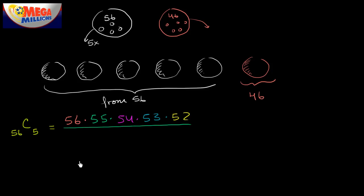So what you want to do is divide this by the way that five things can be ordered. And if you're ordering five things, the first of the five things can take five different positions. Then the next one will have four positions left. Then the one after that will have three positions left.